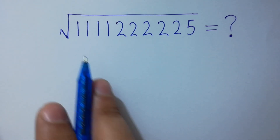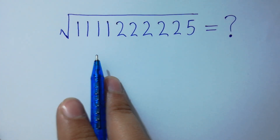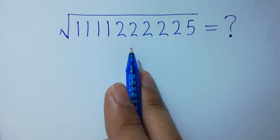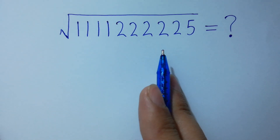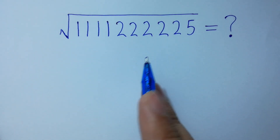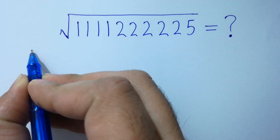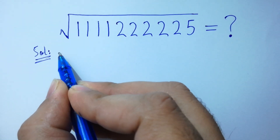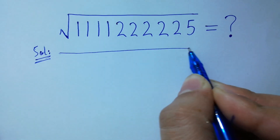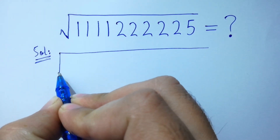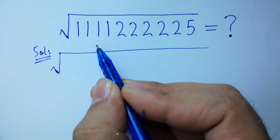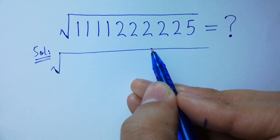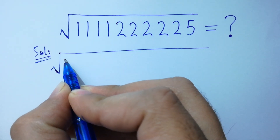Hello friends, how to simplify this problem: square root of 4 times 15 times 25 without using any calculator? Let's have a solution. Square root of 4 times 15 times 25.